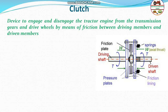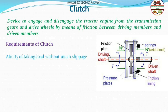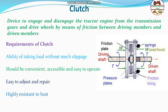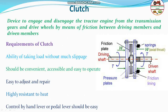Let us see why we need the clutch, and what are its characteristics and functions. First, it should have the ability to take the load without much slippage between the driving shaft and the driven shaft. It should be convenient, accessible, and easy to operate. It should be adjustable and easy to repair. It should be highly resistant to heat, since during engagement or disengagement there will be some slippage and a lot of heat is generated. Therefore it should be resistant to heat since temperature increases due to heat generation. It should be controllable by a hand lever or any other lever attached to the vehicle or machine.